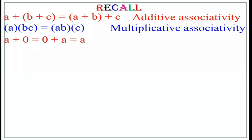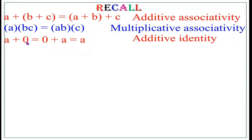A plus 0 equals 0 plus A equals A. If you add any number with 0, the answer is always the number itself. This property is known as additive identity, where 0 is the identity element with respect to addition.